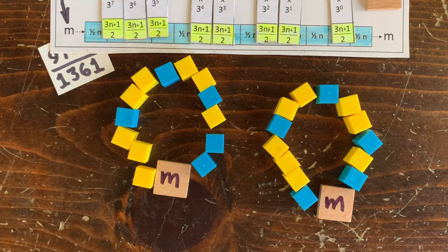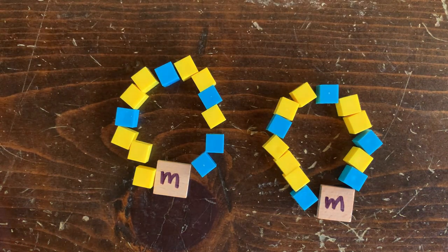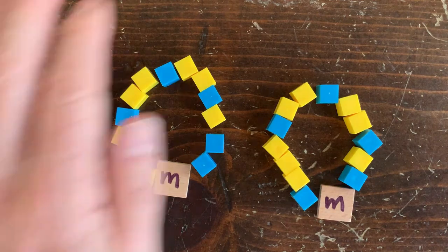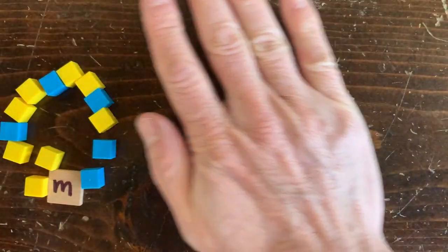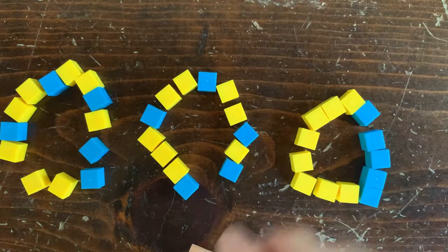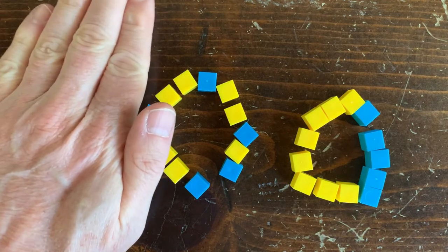So the number of distinct loops is actually equal to the number of distinct necklaces that you can make with 8 yellow beads and 5 blue beads. Let's say you're a jeweler, and I'll pay you $100 for every distinct necklace you make for me with 8 yellow beads and 5 blue beads.